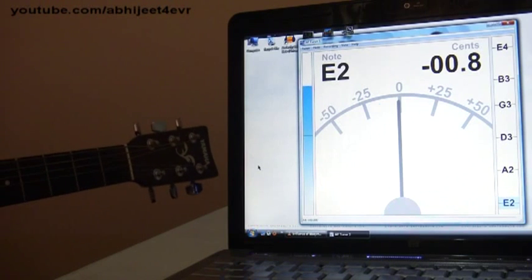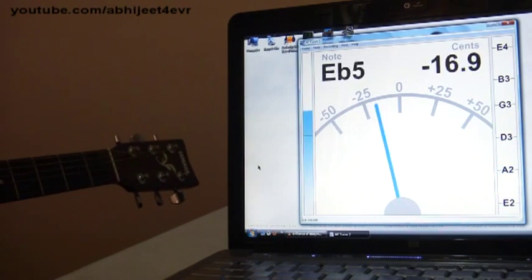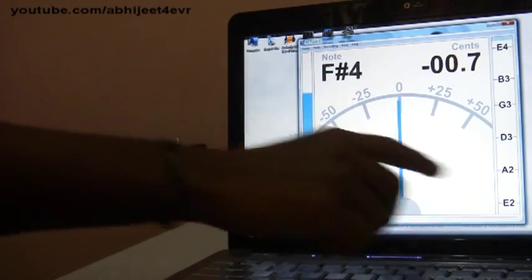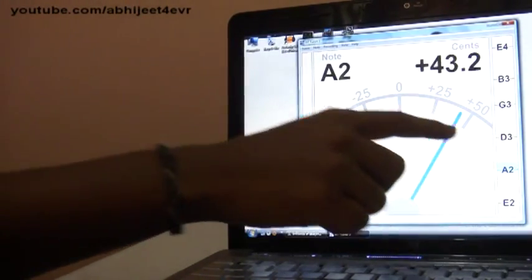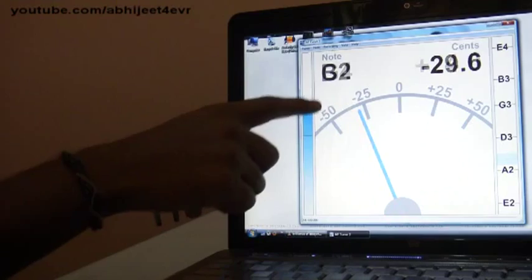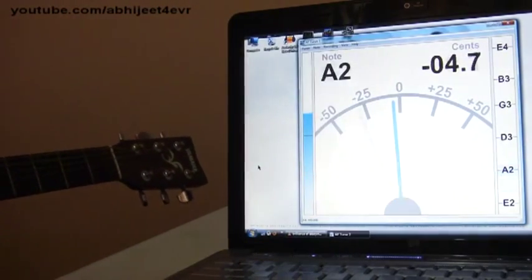So there we are at the center. Now let's proceed towards the 5th string, that is the A string. Here it is named as A2. And the reading that we are aiming at is A2 and 0.0. Let's see.